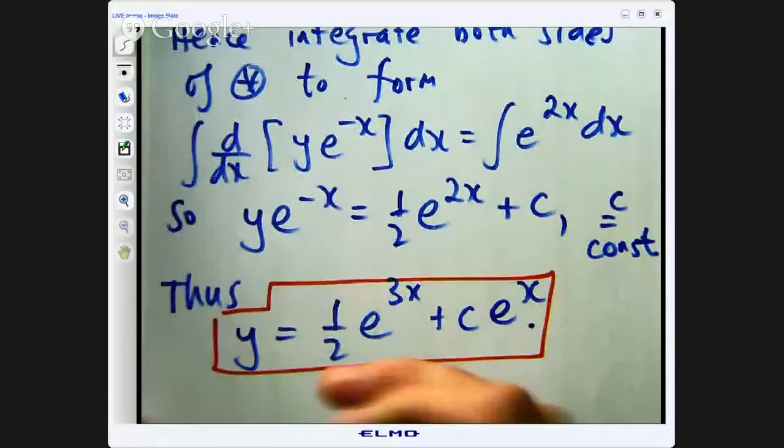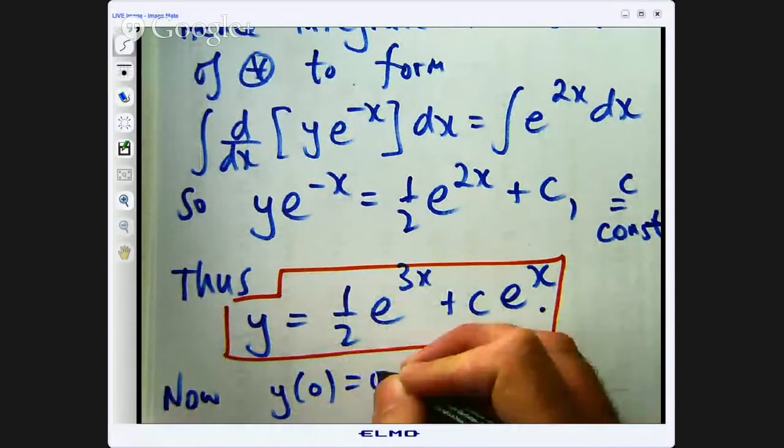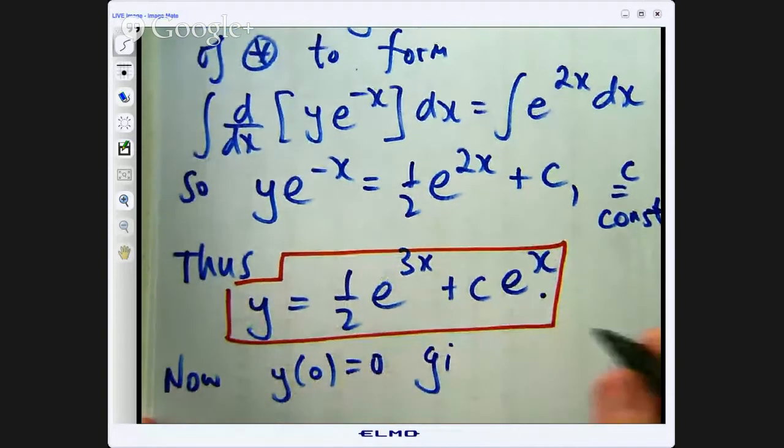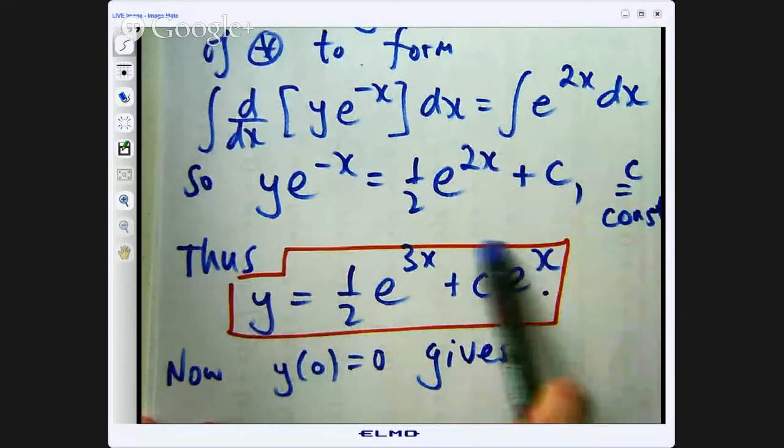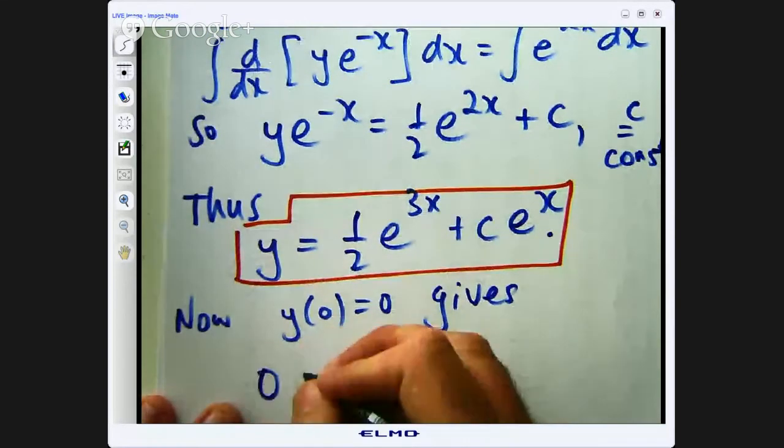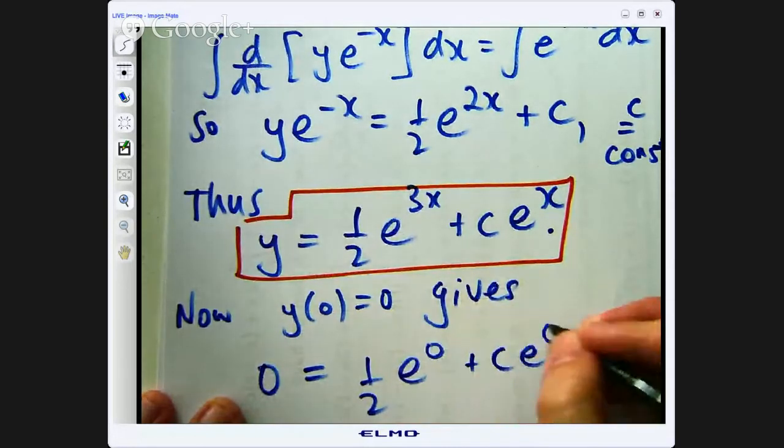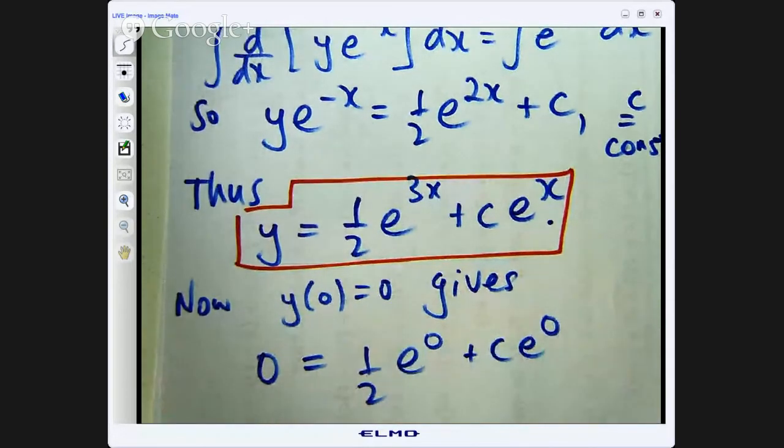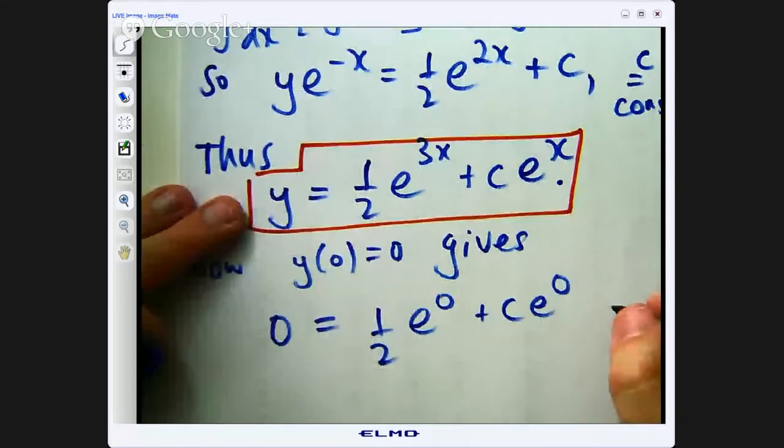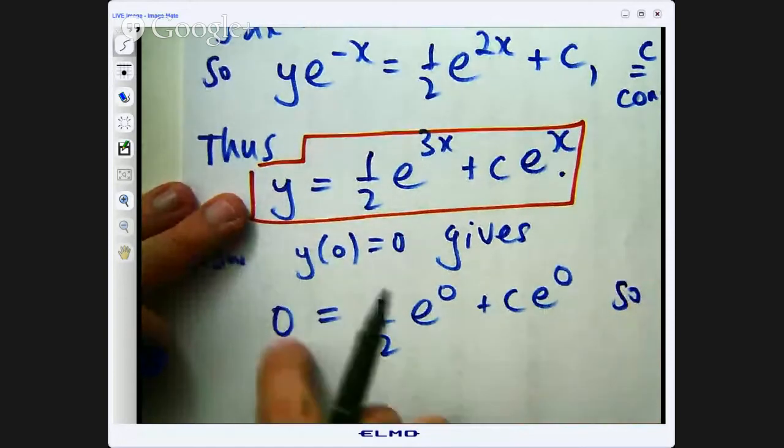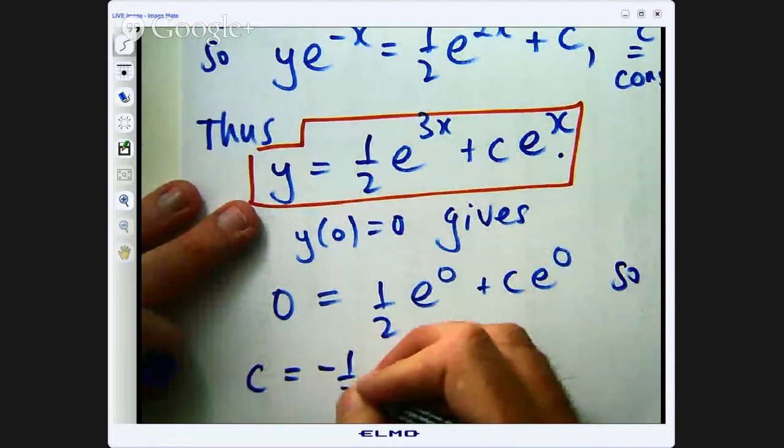So this is known as a general solution. Now, y of 0 equals 0 gives the following. Let us replace y with 0 and x with 0 in here. So e to the 0 plus c e to the 0. E to the 0 is just 1, so let us rearrange and make c the subject. So that will go to the other side and I will get c equals negative 1 half.